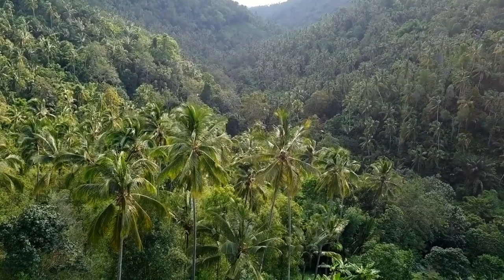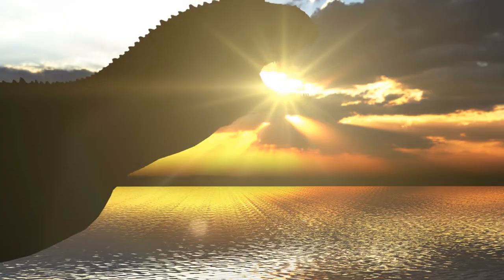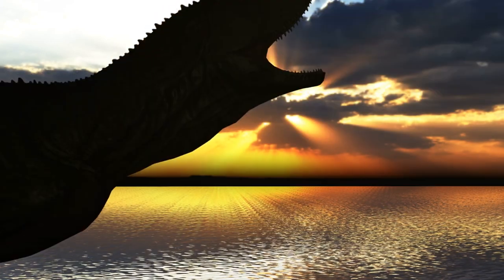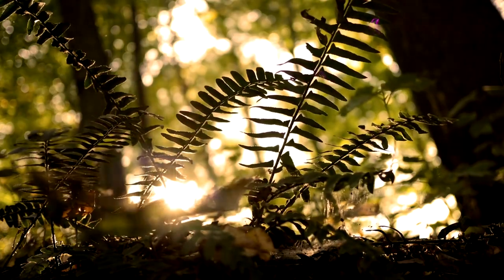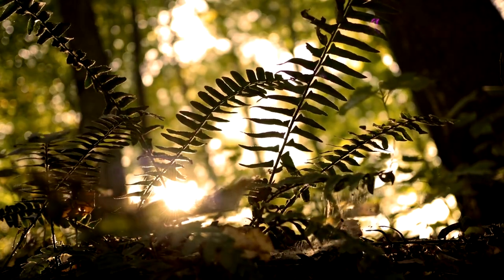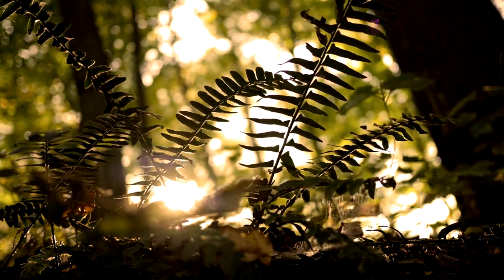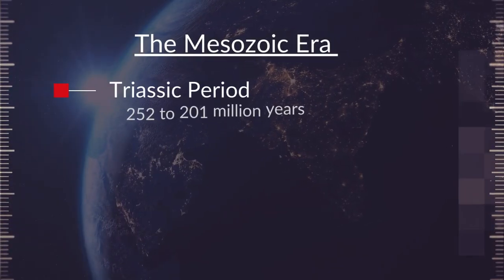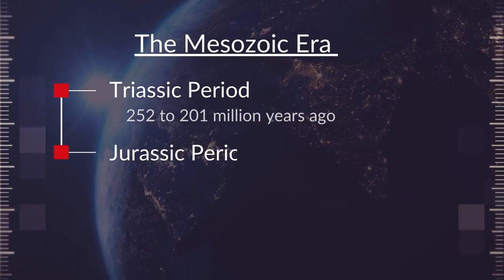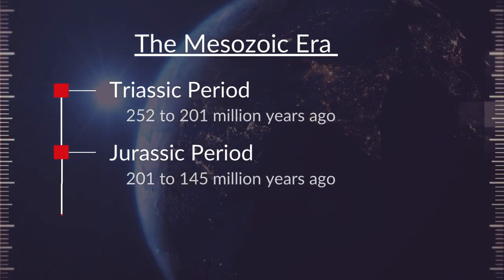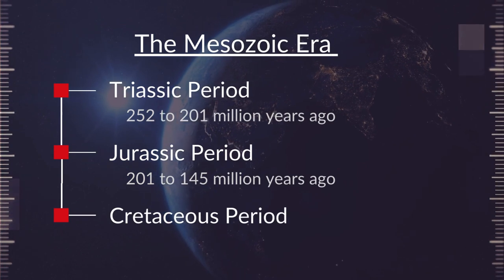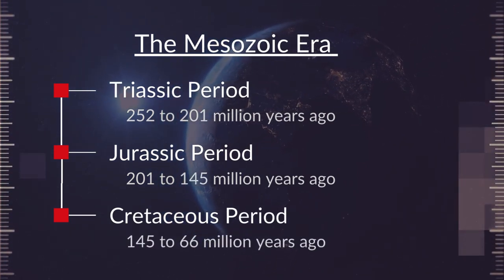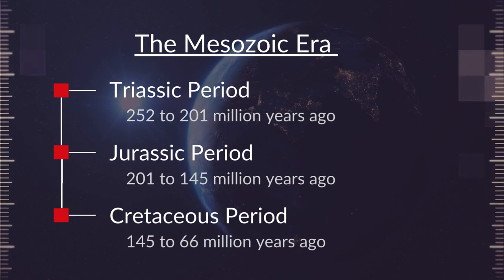Let's set the stage for our etymological journey. Dinosaurs existed on Earth for a vast period of time, spanning multiple geological eras. The primary time during which dinosaurs lived is the Mesozoic Era, which is often referred to as the Age of Dinosaurs. The Mesozoic Era is divided into three major periods — namely the Triassic, Jurassic, and Cretaceous periods — each representing a distinct interval characterized by specific geological and biological events.